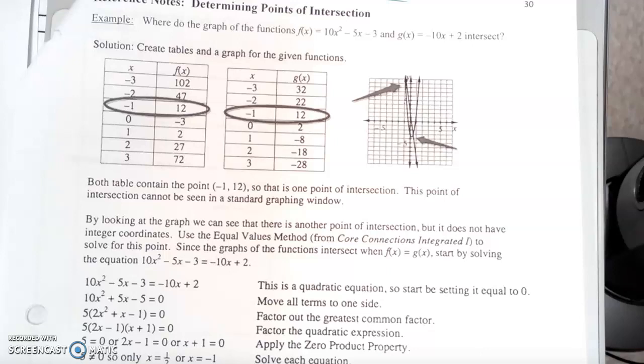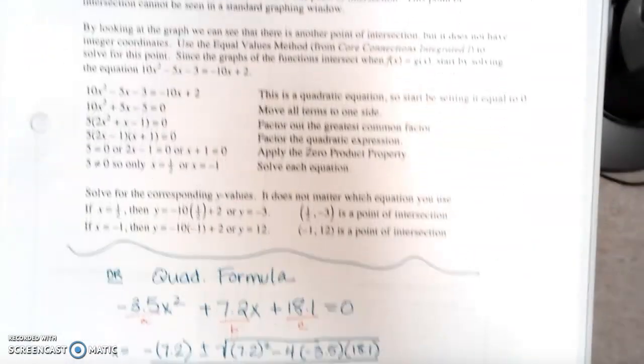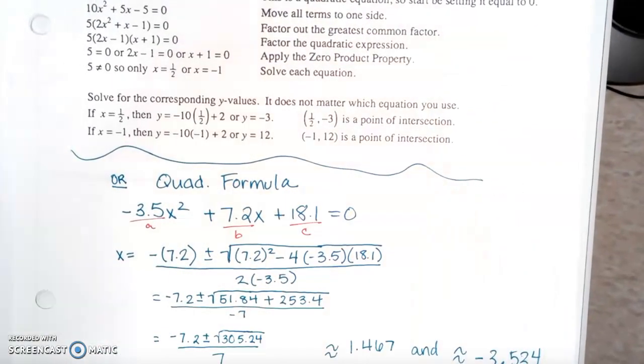But the problem we saw with Winona and his parachute was that the coefficients were not nice and pretty like that. They were all decimals, right? So if you can't factor it nicely, or what I call easily, you might need to use the quadratic formula.